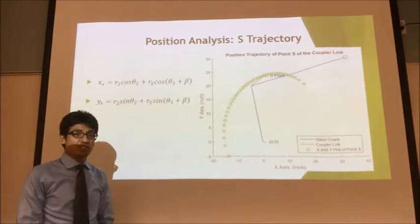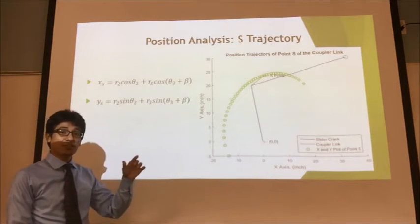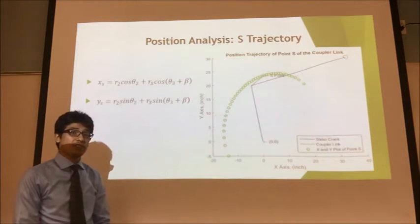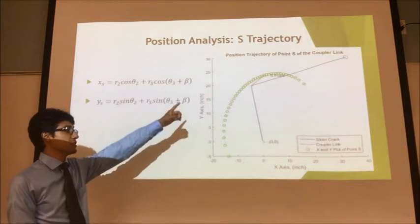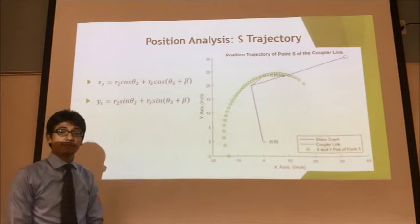And lastly, for our position analysis, we have the coupler link. The S-point in the coupler link will fluctuate depending on where the slider crank is. On this specific point, you can see the x-y coordinates for the S-point, and these are the formulas used to generate it.